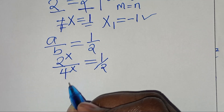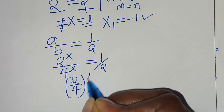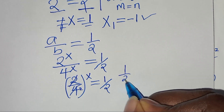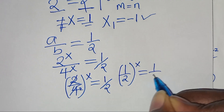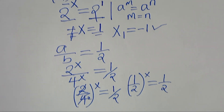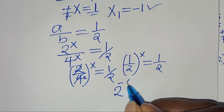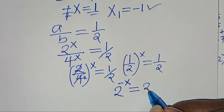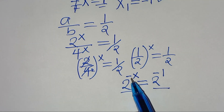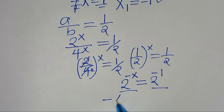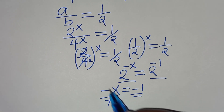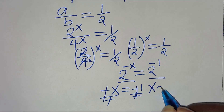This implies that (2 over 4) to the power of x equals one half. Simplifying, we have one half to the power of x equal to one half. Applying the same property, this implies 2 to the power of minus x equals 2 to the power of minus 1. Since the bases are common, minus x equals minus 1, so dividing by minus 1, x₂ equals 1.